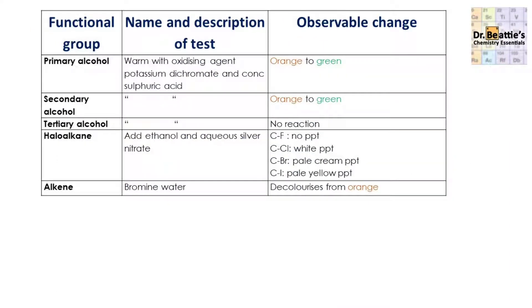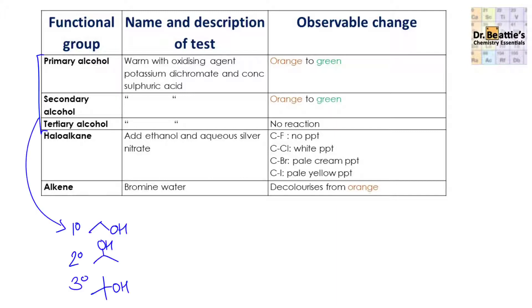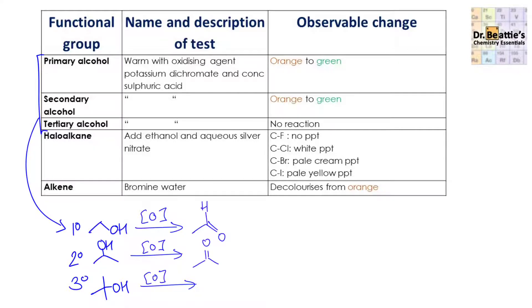Here we have a summary of the year one functional group tests that you should have already come across. The first three chemical tests — quite well known for A-level chemists — involve distinguishing a primary alcohol, secondary alcohol, and a tertiary alcohol. If you were to try to oxidise these using potassium dichromate, the primary and the secondary alcohol can both be oxidised: the primary alcohol to the aldehyde and the secondary alcohol to the ketone.